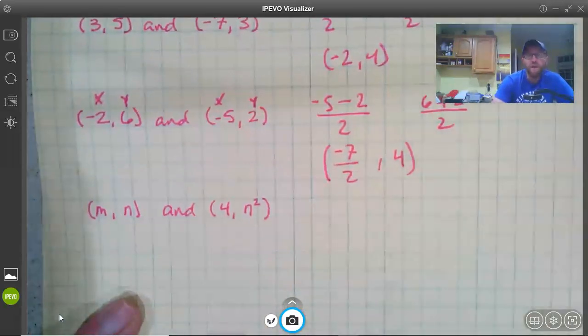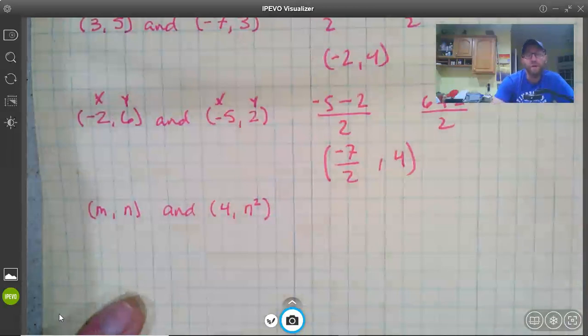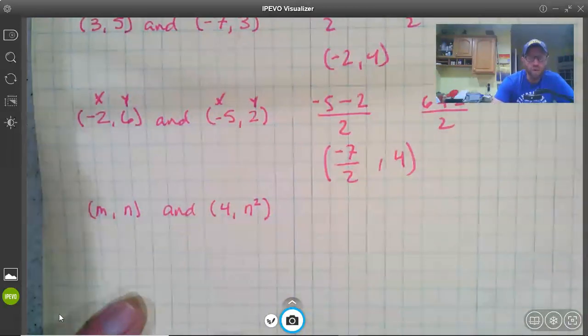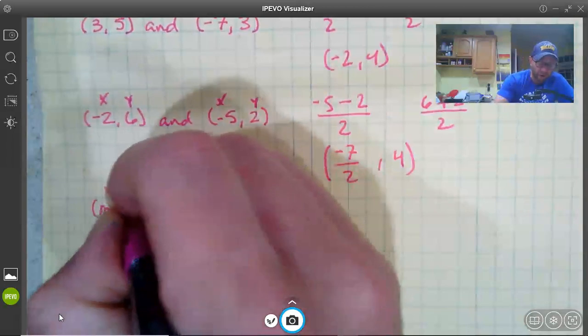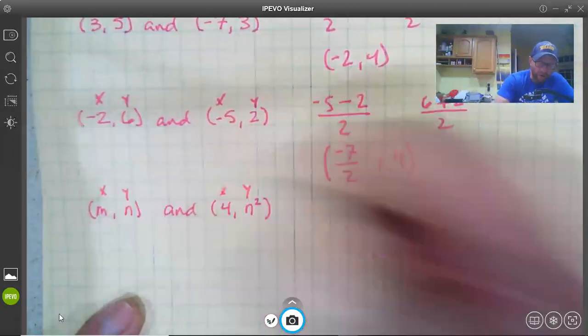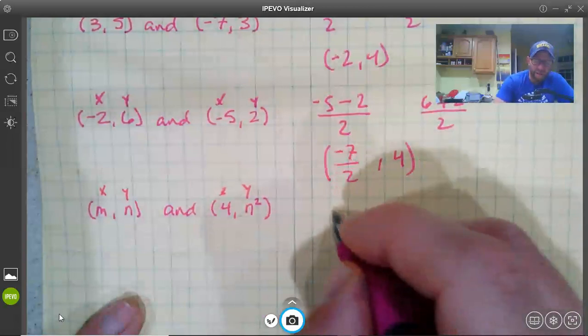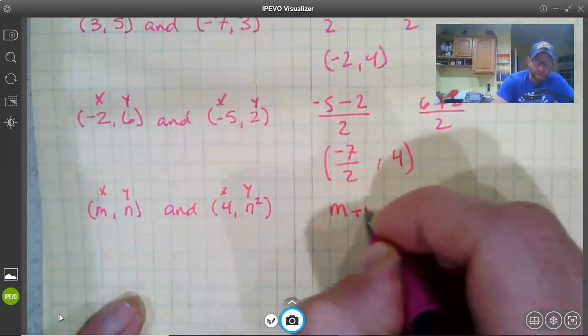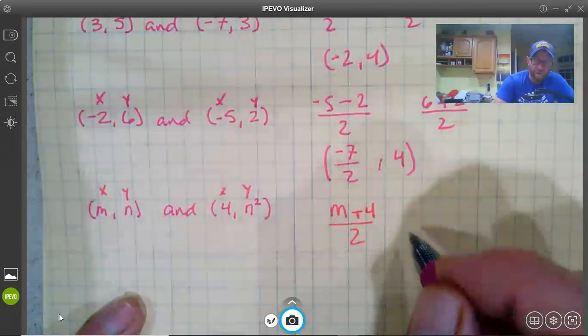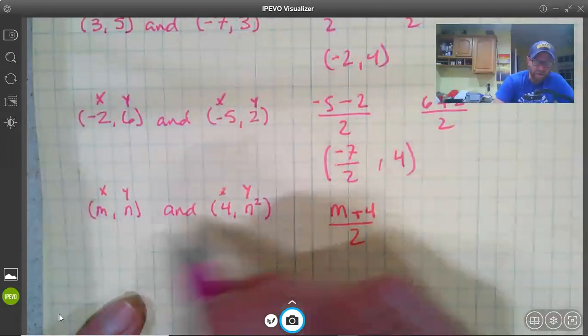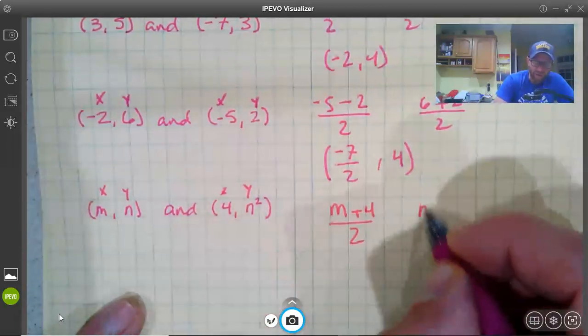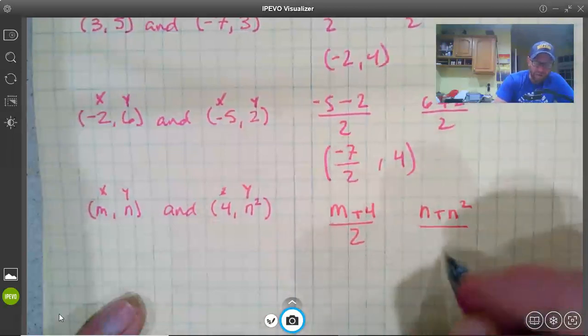Now here, we've got a couple of points that don't even have any numbers - 4, but the rest of them are all variables. And that is perfectly okay. You can have coordinate pairs where we have variable coordinates. And we do the calculations the same way. So we have our x-coordinate and our y-coordinate. I've got m and 4 divided by 2, and that's our x. And then for the y, it's n plus n squared divided by 2.